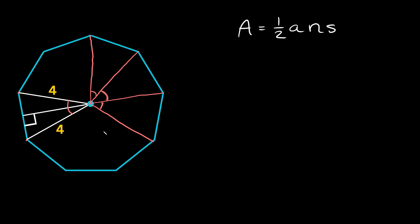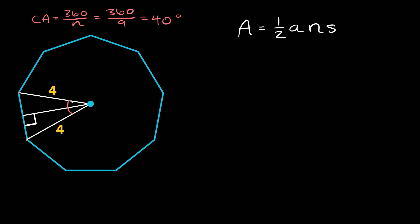A central angle on a regular polygon goes from the center to a vertex and then to the next vertex. The formula for a central angle is 360 divided by n, where n is the number of sides. Since we have nine sides, the central angle is 360 divided by 9, which equals 40 degrees.